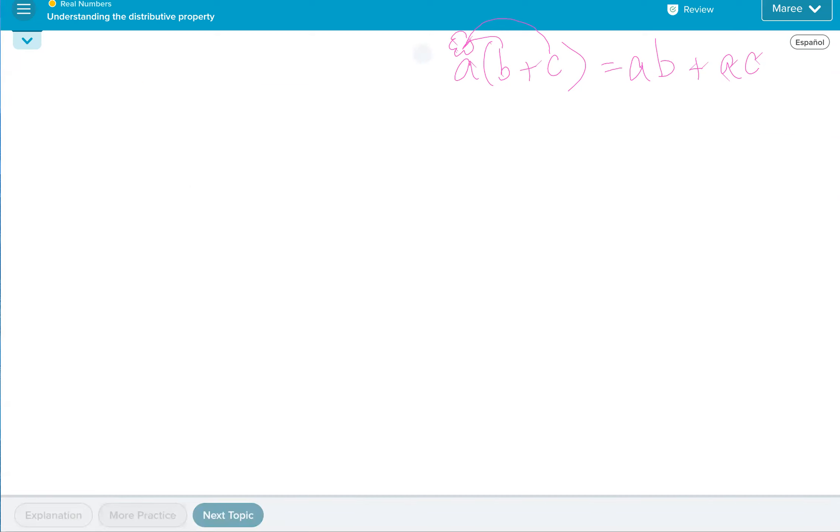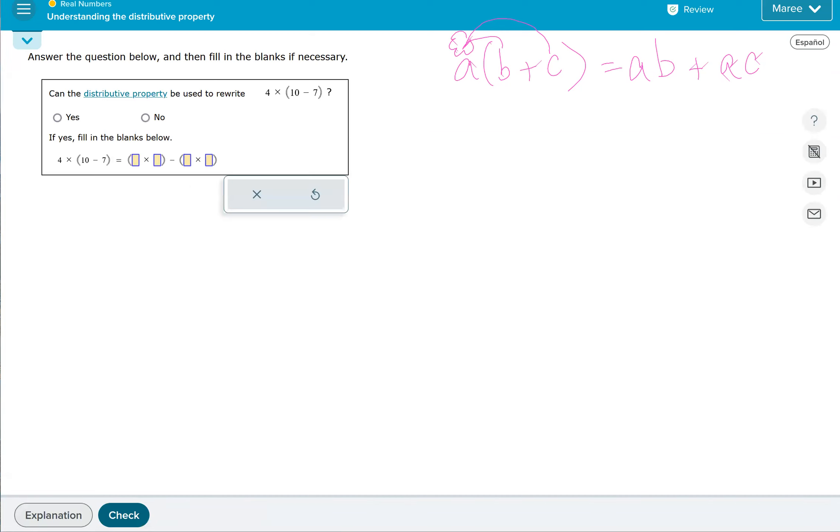Let's see if we can try again. On this one, even though there's not a plus sign, there's a minus sign there, we can still use the distributive property. In our distributive property, it means the same thing if there's a minus sign there. We just put a minus sign.